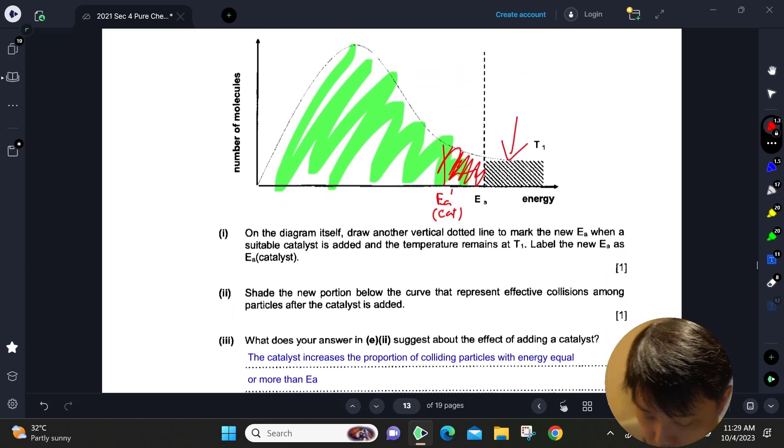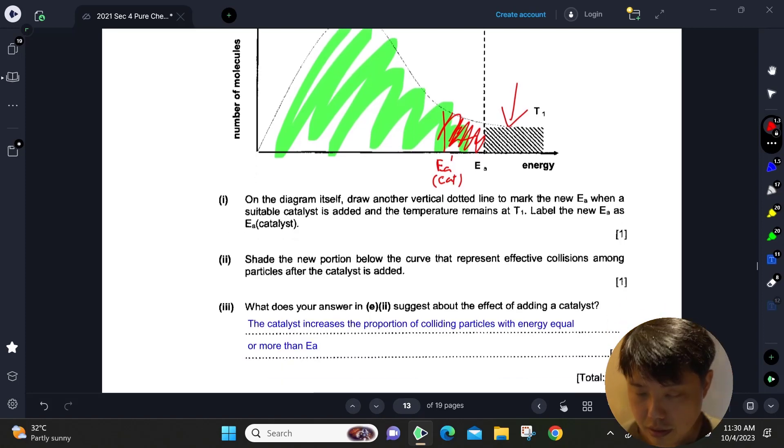What does your answer suggest about the effects of adding a catalyst? It increases the proportion of colliding particles which have more than activation energy. That's what a catalyst does: it gives more particles enough energy to react, so there'll be an increase in frequency of effective collisions, and so the rate of reaction also increases.